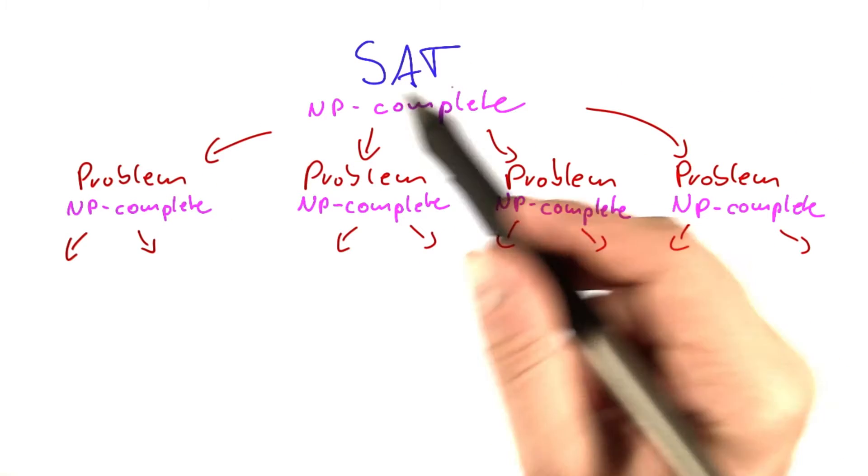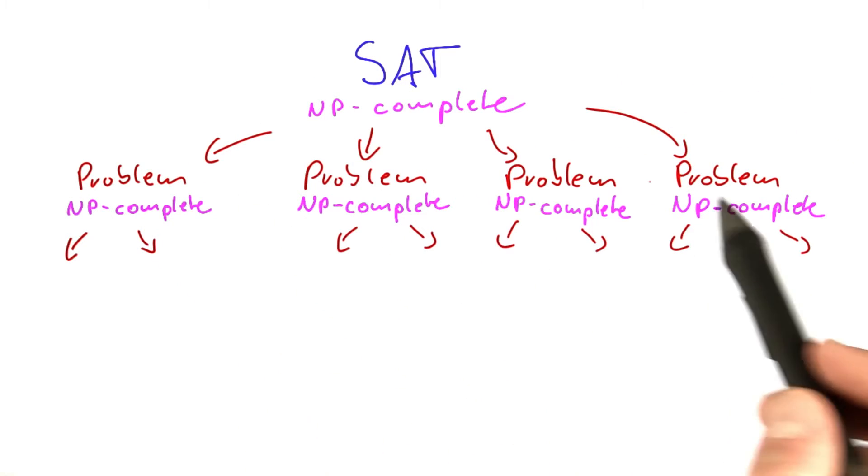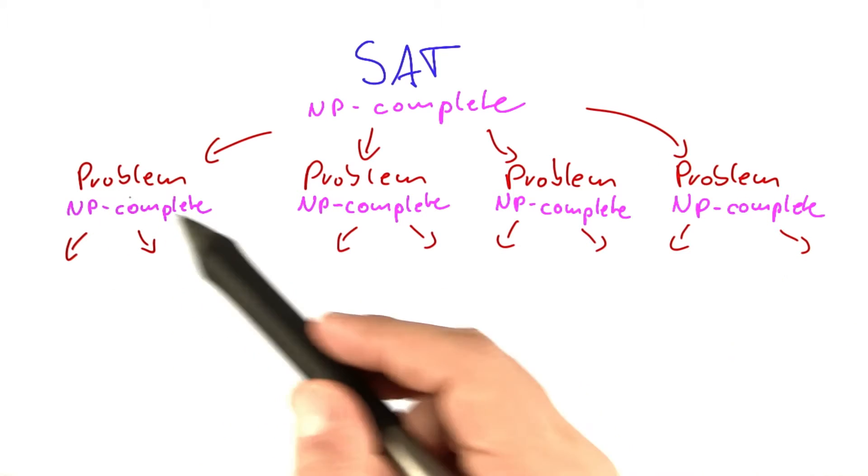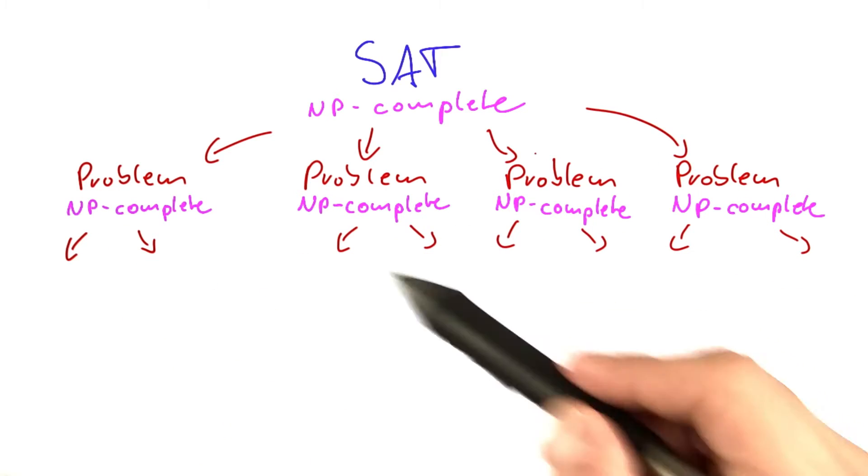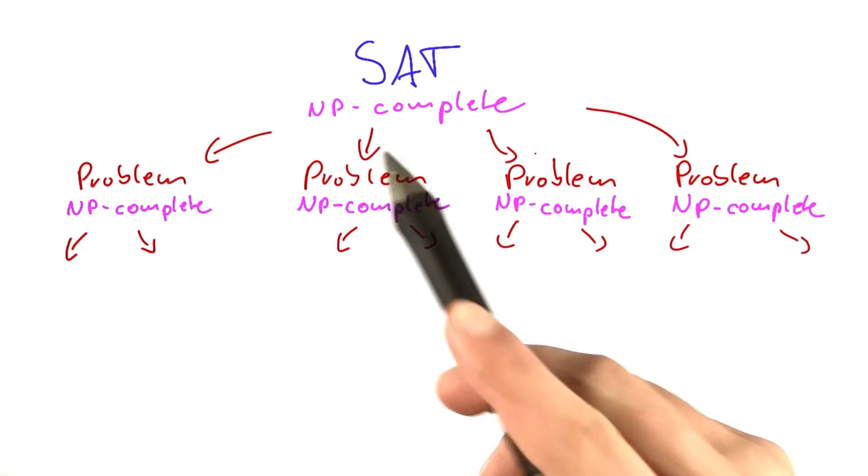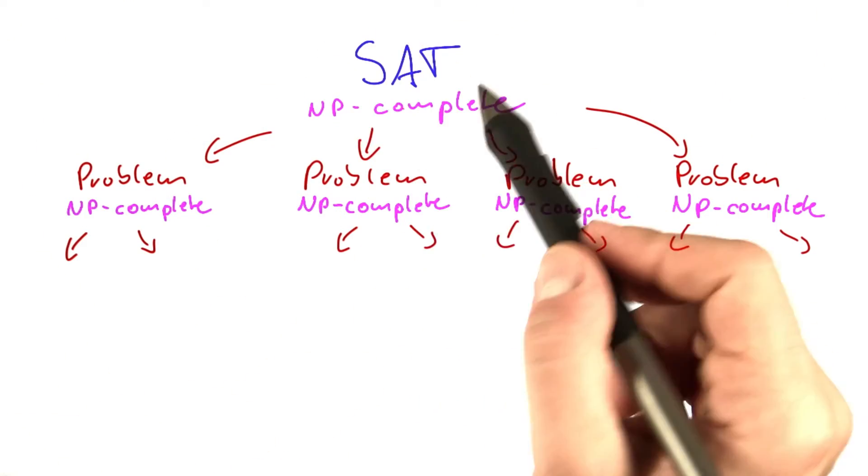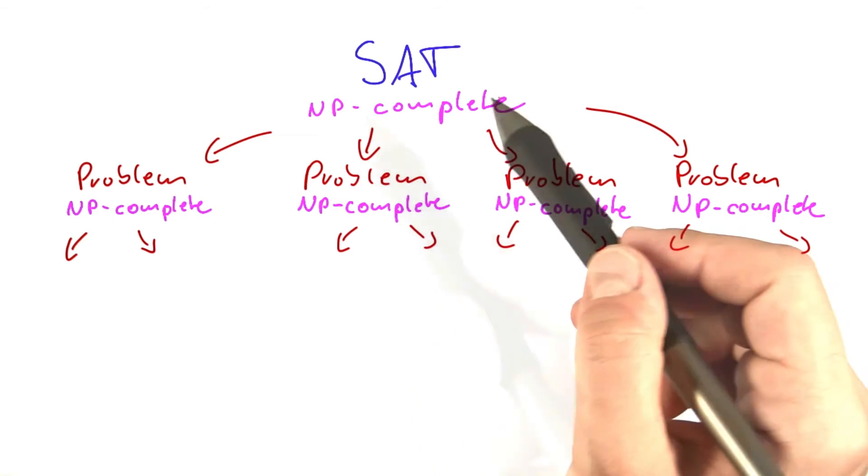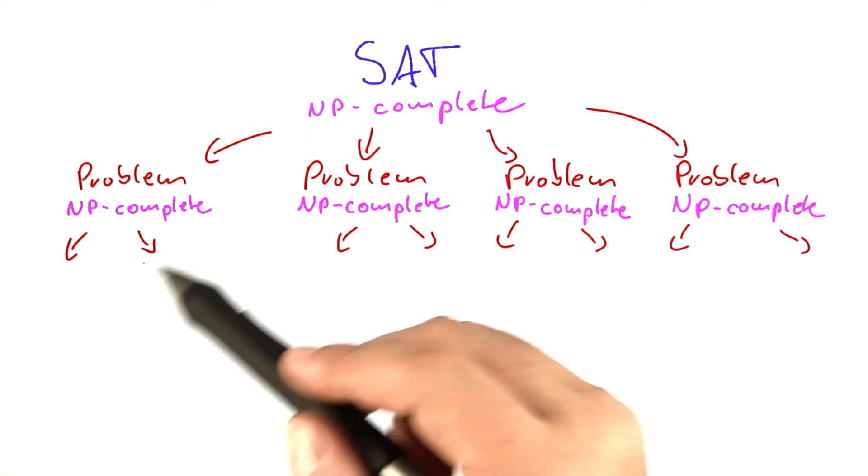So we can use SAT to show other problems to be NP-complete now, and once we have shown these problems to be NP-complete, we can use them as well to show other problems to be NP-complete. So we are basically building this whole tree of NP-complete problems using SAT as a seed problem, and it will just suffice to show these reductions here.